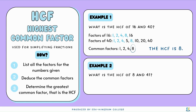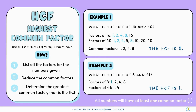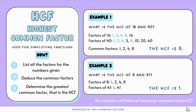Example number 2: what is the HCF of 8 and 41? The factors of 8 are 1, 2, 4, and 8, and the factors of 41 are just 1 and 41. So the highest common factor is going to be 1. Keep in mind that all numbers will have at least one common factor, which is 1.